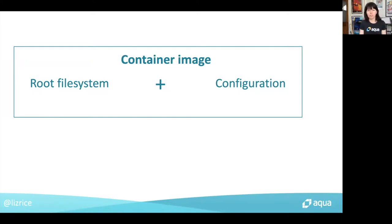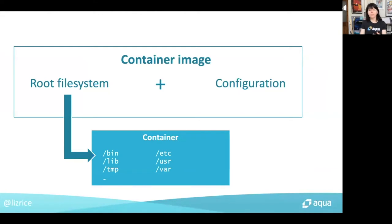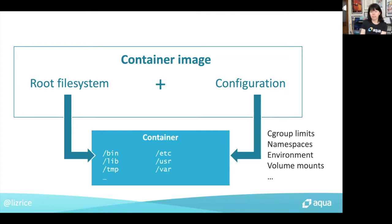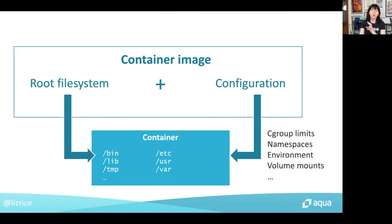There's a root file system, which when you instantiate your container, the container gets essentially a copy of that root file system — the directory structure and all the files described by the container image. Then there's also some configuration information included in the container image, such as resource limits and environment variables. All of that configuration information can be overridden at runtime, but you can't really change the file system information inside the container image. So that's really what we're going to focus on today.